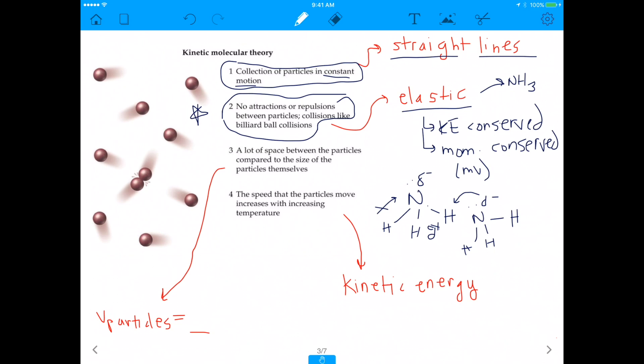With that being said, let's move on to number three. It says a lot of space between the particles compared to the size of the particles themselves. So what does that mean? Basically, what I'm saying is that the volume of the particles, which I've abbreviated V particles here in the lower left corner, is zero. So if you had a whole Coke bottle, right? And it was obviously empty, right? This is my lovely Coke bottle. And you had a gas in it.